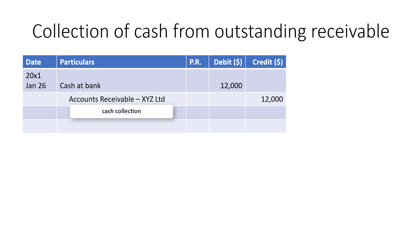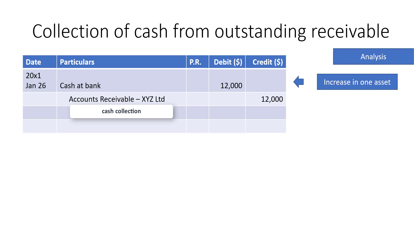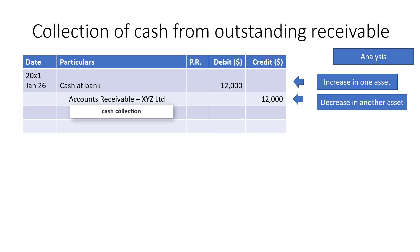For the collection, that will be debit cash, credit accounts receivable. The analysis will be an increase in one asset and a decrease in another asset — it's just compensating on one side. Increased in one asset but also a decrease in another asset. That ends my presentation. Thank you for watching.